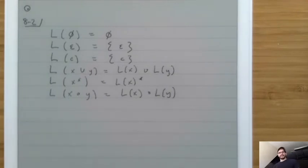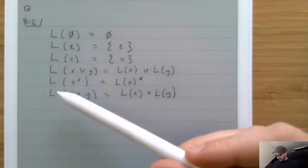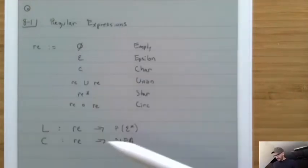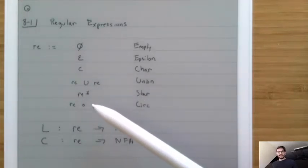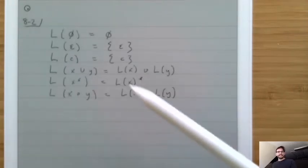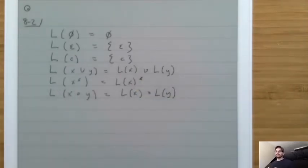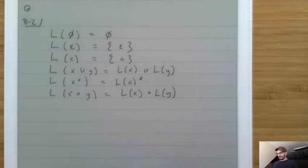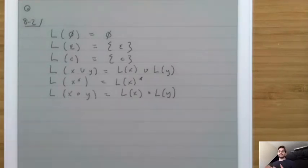You may be looking at this and saying this is stupid — what is actually useful about this? This is actually kind of the point. The L function that takes a regular expression and turns it into an element of the set of languages is a trivial function. It's completely trivial, and therefore it is easy to understand what regular expressions mean. They map perfectly to the underlying set formulas that they're talking about.